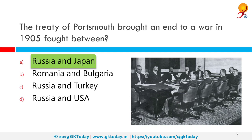The Treaty of Portsmouth brought an end to a war in 1905 fought between which nations? The correct answer is Russia and Japan. The Treaty of Portsmouth formally ended the 1904-1905 Russo-Japanese War. It was signed on September 5, 1905, after negotiations lasting from August 6 to August 30, at the Portsmouth Naval Shipyard in Kittery, Maine, United States.